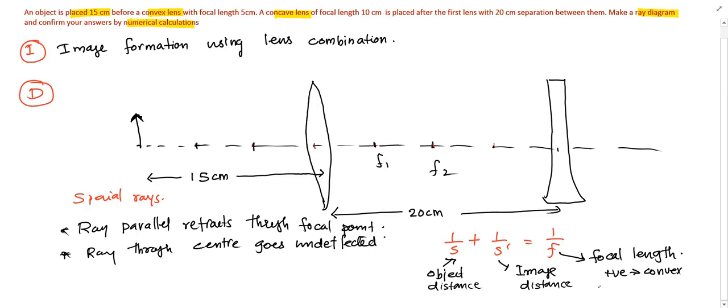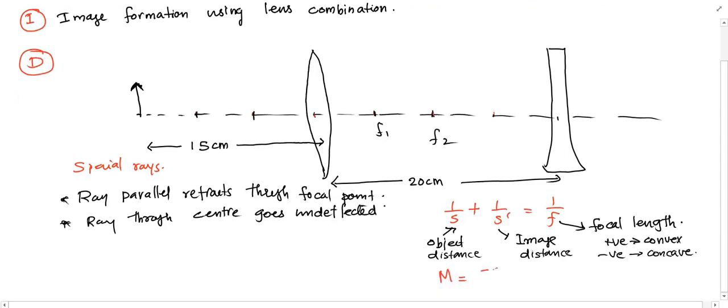The object distance and the image distance can be positive or negative depending on the situation. The magnification can be obtained from the object and image distance using the equation m = -s'/s.